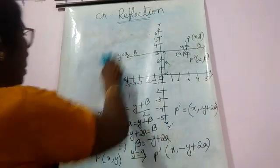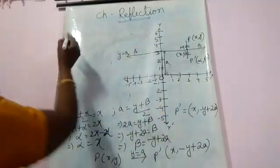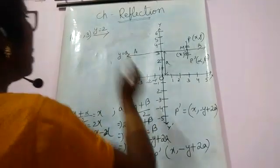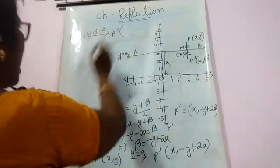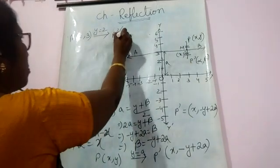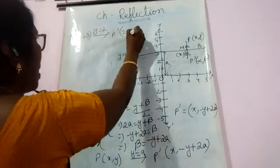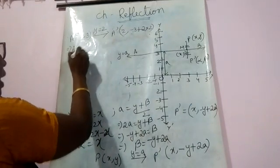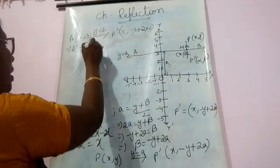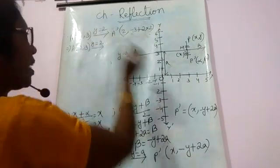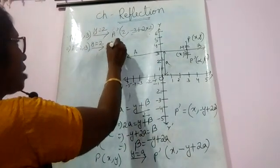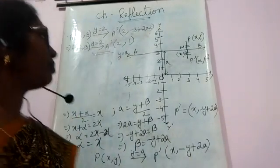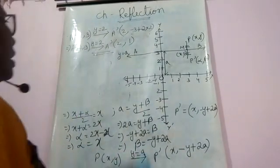Now you have the formula for when a point reflects through a line parallel to the x-axis. Suppose A has coordinates (2, 3) and it reflects through y = 2. The x-coordinate remains the same: 2. The y-coordinate will be -y + 2a = -3 + 2(2) = -3 + 4 = 1. So A(2, 3) reflecting through the line y = 2 gives image A'(2, 1).